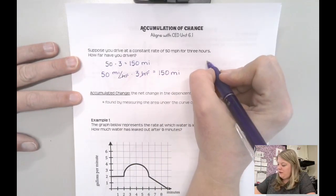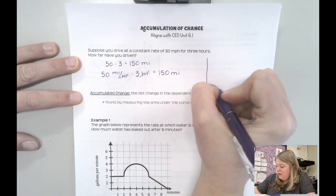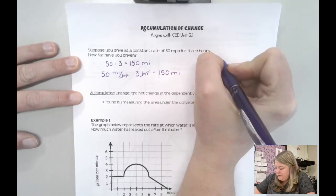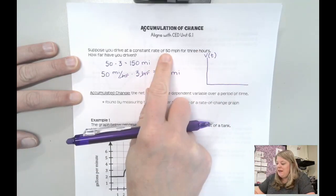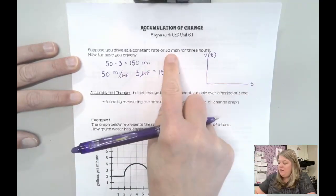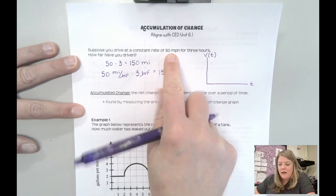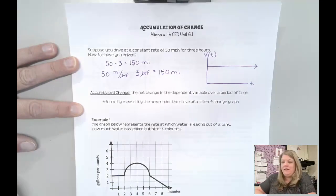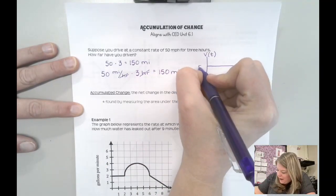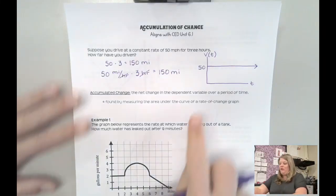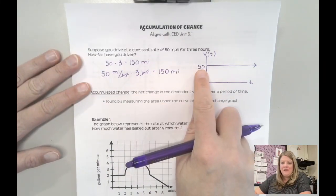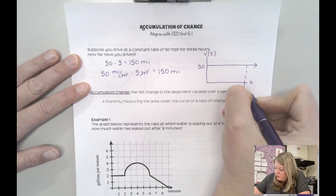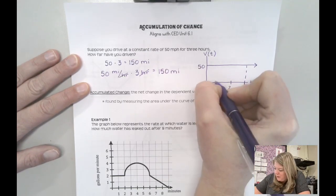If I wanted to draw a quick sketch of a graph here — and we're going to have this be a velocity graph — if my velocity is a constant rate, and this would be my time here, if my velocity is a constant rate of 50 miles an hour, then my velocity would look like this. This is at 50, and I'm traveling 50 miles per hour constantly for three hours. We'll say that this is when time is equal to three — maybe this is two, maybe this is one.